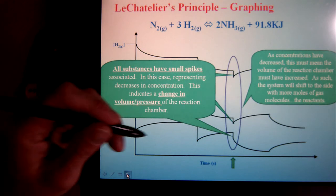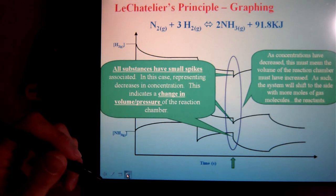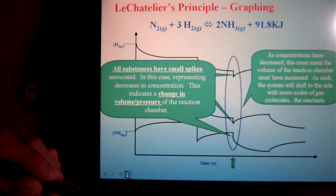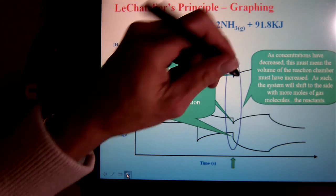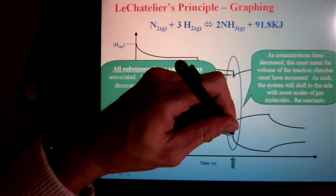If I see multiple spikes, as in this example, notice they're smaller than the other one. Multiple spikes means everything's changing concentration. They'll always be in the same direction. We're going down, we're going down, we're going down again.